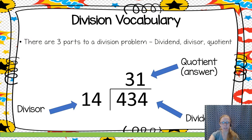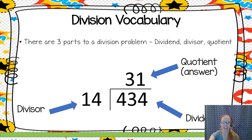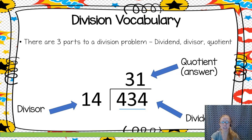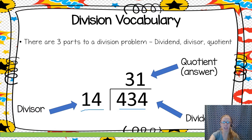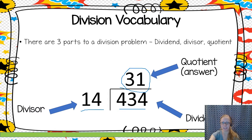There's a little bit of vocabulary that we need to know as we work with division problems. Every division problem has three parts. The dividend is the number that goes under the house in the standard algorithm — it is the number that's being divided up into smaller pieces. The divisor on the outside is how many parts that dividend is being split into. And finally, the number on top is our quotient — that's the answer to our division problem.